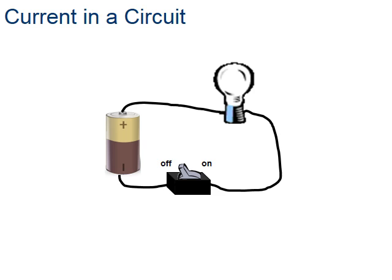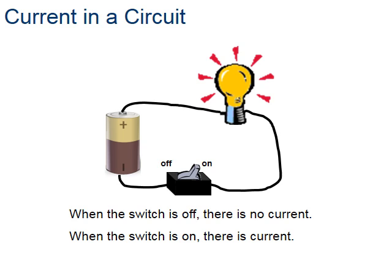How does that actually work in a circuit? This is a simplified version of a circuit. You have a battery, which is like the tank we had in the last slide. We have a switch, which is a lot like the faucet. We've also introduced a light bulb, and the wire simulates the pipe. Here, when the switch is off, there's no current. But when we turn the switch on, the light turns on.